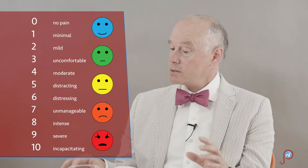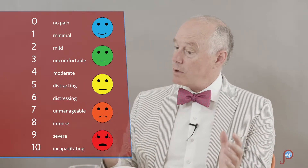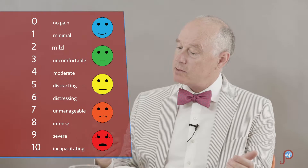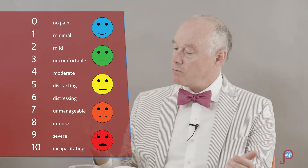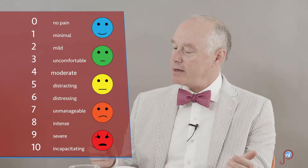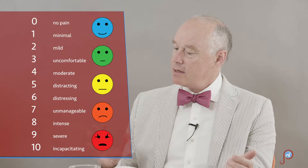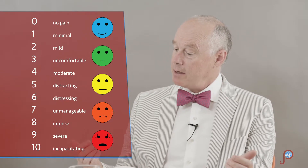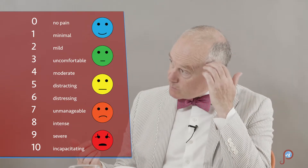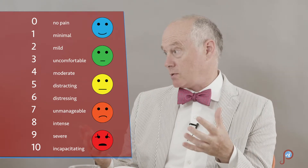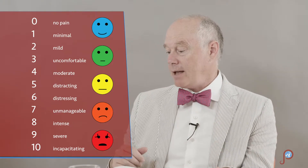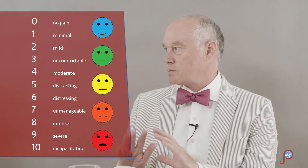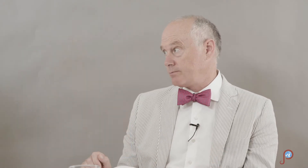The grades go: zero being none, one minimal, two mild, three uncomfortable, four moderate, five distracting, six is when you start to be distressed by the pain, seven is when it's starting to become unmanageable, eight is intense, nine is severe, and ten is when the pain incapacitates you.